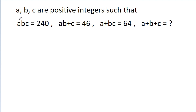In this video, we have given that A, B, C are positive integers such that ABC is equal to 240, AB plus C is equal to 46, and A plus BC is equal to 64. We have to find A plus B plus C.